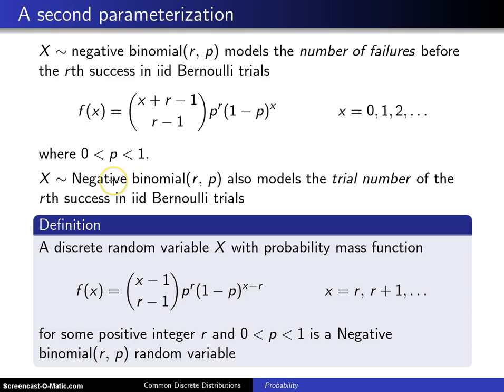Well some people, instead of using the number of failures before the rth success, like to use the trial number of the rth success, and in that case we use a capital N to differentiate between this negative binomial and this negative binomial. It's still got the same parameters r and p, but now the trial number can begin on the rth trial. So instead of the support starting at 0, it now starts at r.